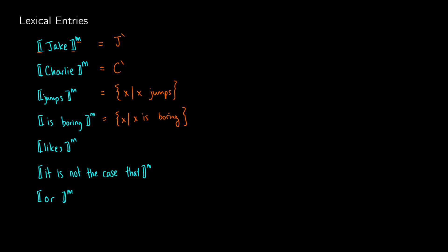For a transitive verb like 'likes,' we have the set of pairs ⟨x, y⟩ such that x likes y. This has a subject x and a direct object y, with positions clearly laid out in the meaning. So far we've covered the nouns in the first two rules, the intransitive verbs in the next two rules, and one rule for transitive verbs. The next rule is going to be for negation — 'it is not the case that.' This is a truth value changer, and we write it in matrix notation: a true sentence becomes false, and a false sentence becomes true.